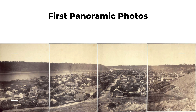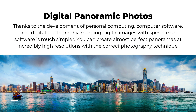Moving a few hundred years forward and looking at the first panoramic photographs — they were made by simply aligning printed versions of film. Of course the result didn't turn out very well, because it was close to impossible to perfectly align photographs.